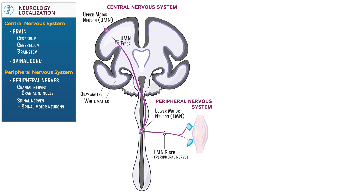Now let's learn how to distinguish upper motor neuron and lower motor neuron findings on neurological exam. The first step in evaluating a neurological patient is figuring out if it's an upper motor neuron or lower motor neuron injury. Use the headers: injury type, muscle tone, muscle stretch reflexes, and pathological reflexes. We'll use the Babinski sign, which is the most commonly recognized pathological reflex.